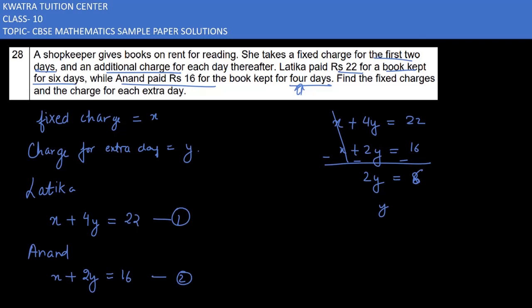So the value for y would be 6 over 2, which is 3. Now in the first equation we can substitute this value so that you can get the value of x. So x plus 4 into 3 equals 22, which means x plus 12 equals 22, so x equals 22 minus 12, which would be 10.